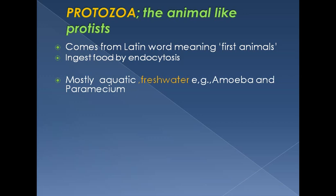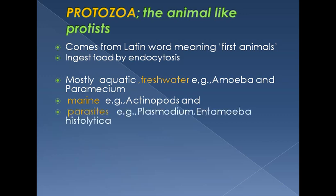Protozoans are mostly aquatic and may be found in fresh water or marine environments. Freshwater examples include amoeba and paramecium, while marine examples include Actinopods. Some may be parasites — like Plasmodium, the malarial parasite, and Entamoeba histolytica, which causes amoebic dysentery.